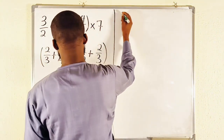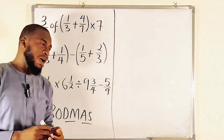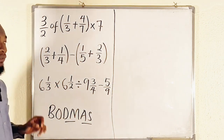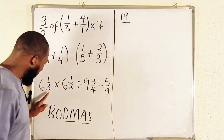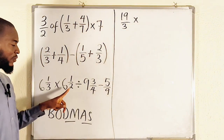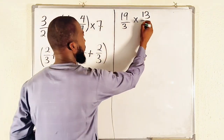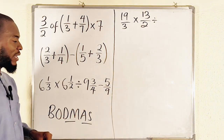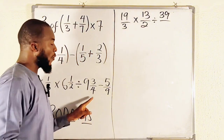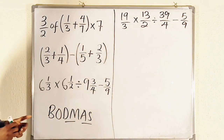Now let us move on to the last one. We have 6 and 1 over 3 — let's change it to an improper fraction directly. To change a mixed number to an improper fraction: take 3, multiply by 6; 3 times 6 is 18, then add 1 to get 19. So 6 and 1 over 3 equals 19 over 3. Then multiplication. Do the same for 6 and 1 over 2: 2 times 6 is 12 plus 1 is 13, giving 13 over 2. We also have a division sign, and 4 and 3 over 4 becomes 4 times 9 equals 36 plus 3 equals 39 over 4. Finally, minus 5 over 9.